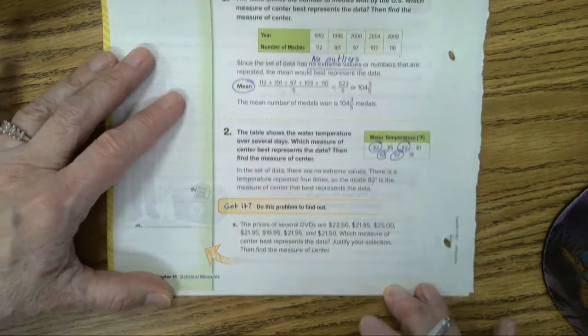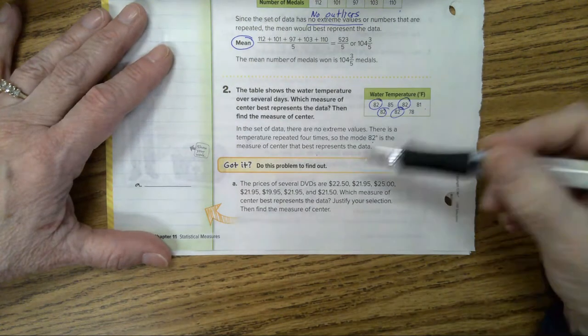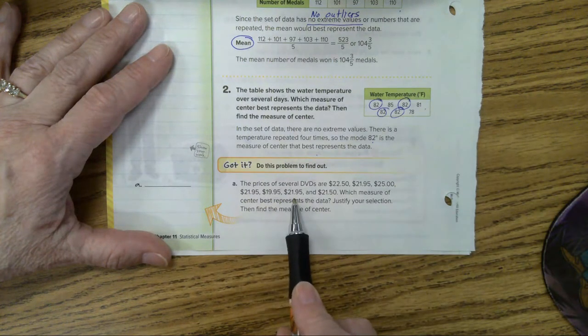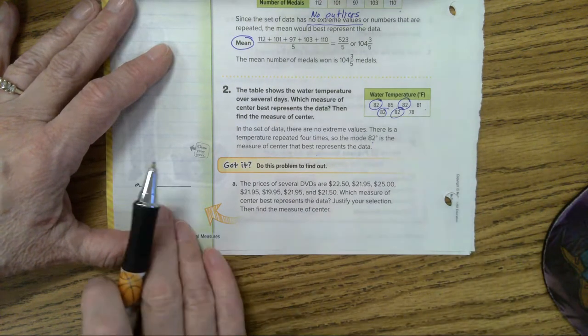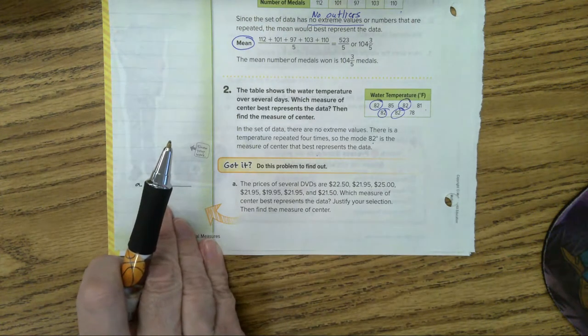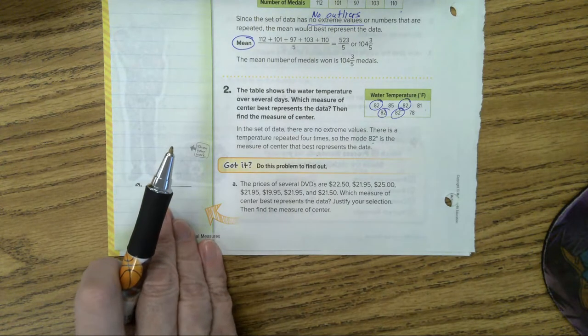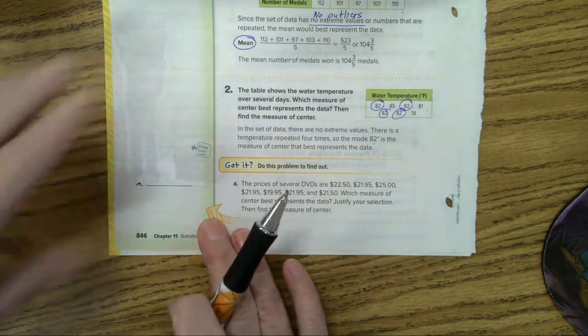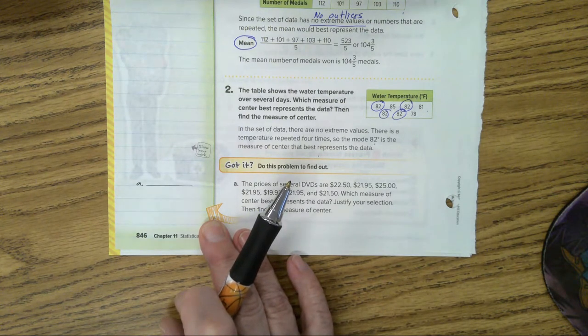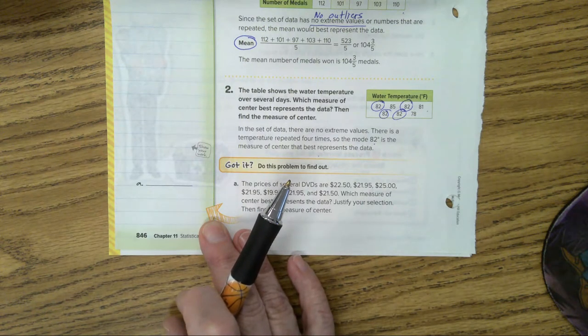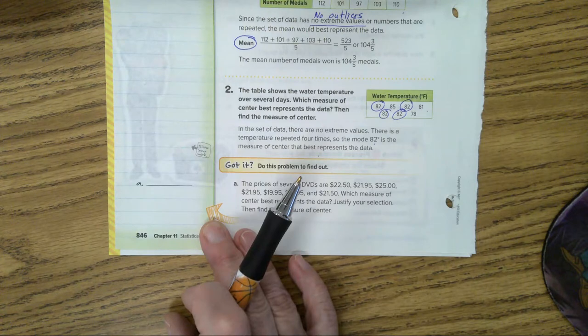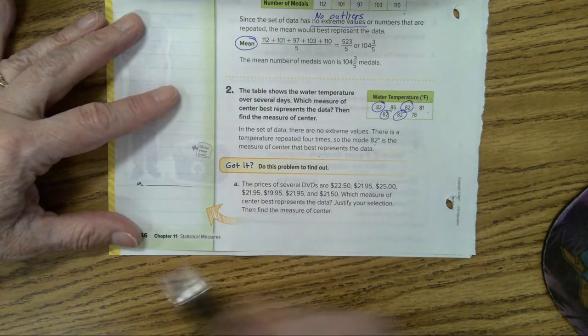Now, let's look at letter A. The price of several DVDs are listed. 2250, 2195, 25, 2195, 1995, 2195, and 2150. Which measure of center best represents the data? Justify your selection. Then find the measure of center. Okay. Are there any outliers in this data set, kids? No. So, what do you recommend to use if there is no outlier? The mean. We're going to use the mean on this one. And when you add them all together and divide, I'm just going to give you the answer to that. It's going to be 21. You know what? It's not going to be the mean.